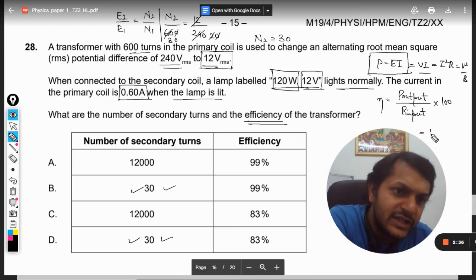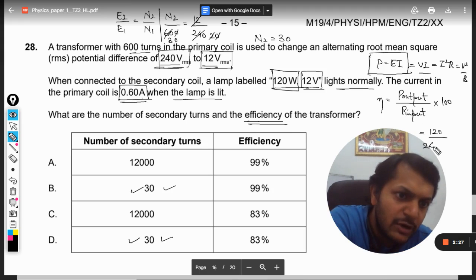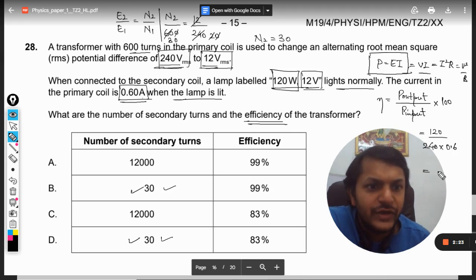Now power output we know is 120 because that is the lamp and lamp is providing the power output of 120 watts. So it is 120 divided by power input. So power input will be 240 is the voltage and the current is 0.06.